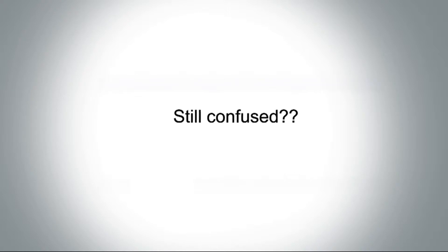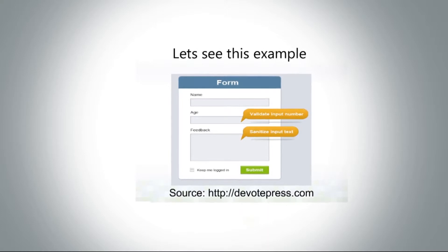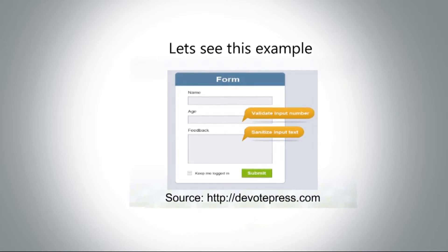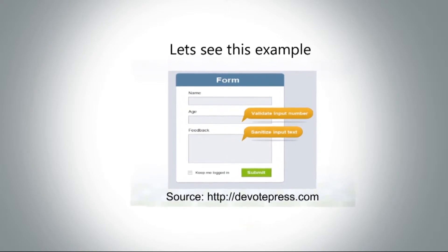Here is a simple example. I'm asking for a name field, an age field, and a feedback field. For the age field, if the user enters text like 'my name is this' instead of a number, you reject it and ask them to re-enter the actual data. But for the feedback field, if the user writes some text and also includes a script tag with malicious code, you just escape out that script, save only the clean text to the database, and do not ask the user to re-enter the whole feedback. So you should sanitize all feedback fields and validate all age fields.